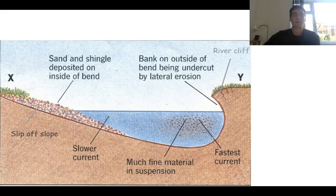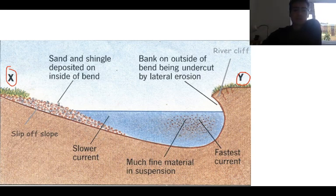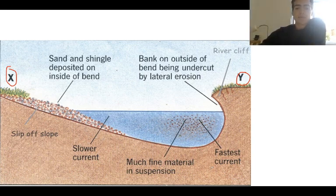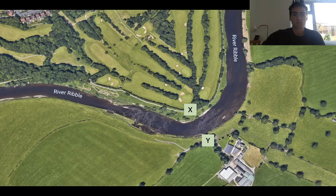When we look at a river cross-section, the river is very different on the inside compared to the outside. On the inside of the meander, we have something called the slip-off slope. We have a much slower current and we get sand, shingle, and other sediment deposited on that inside bend. However, the complete opposite happens on the other side – we get a faster current and lots of erosion on the outside. The inside is much shallower; the outside is much deeper.